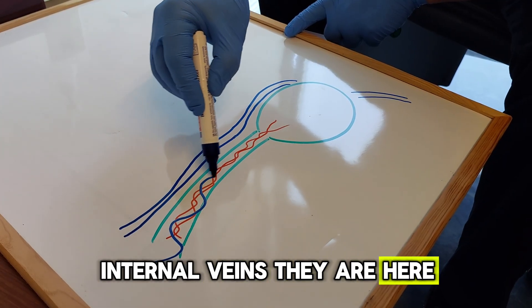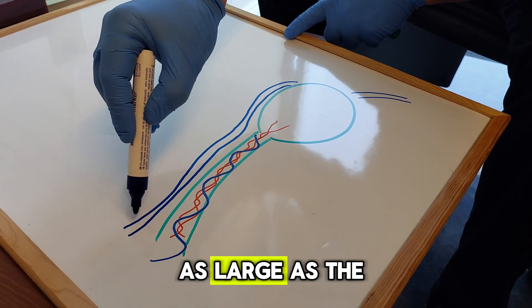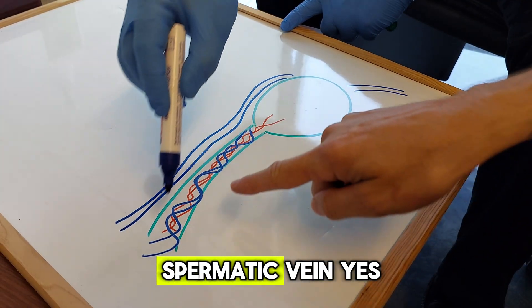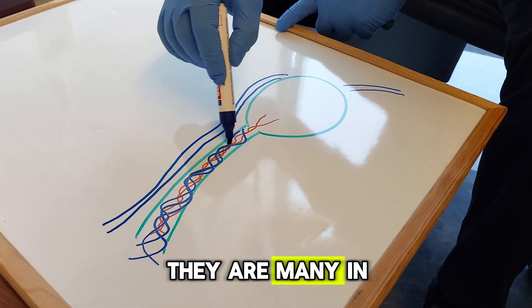The other one is internal veins. They are here. Sometimes they are not as large as the external vein, but sometimes they are very large. These are the internal spermatic veins, but they are many.